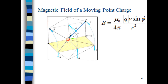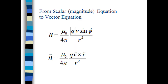Now we have a way of calculating the magnitude of the magnetic field at point P. What we really want is a vector equation that gives us its direction. We notice that sine phi is the sine of the angle between the velocity vector and the r-hat vector, so this turns out to be a cross-product equation. What we have is the complete equation for measuring the magnetic fields of a moving point charge at all points in space.